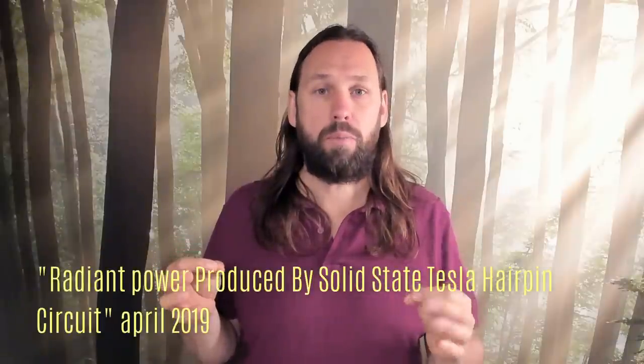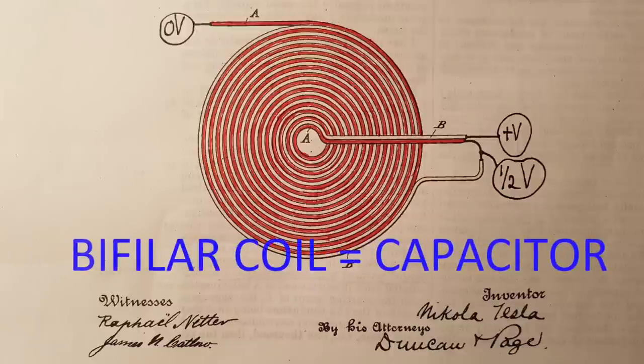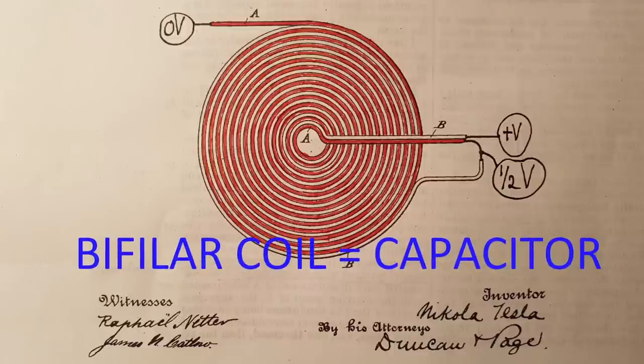So with series resonance, we don't have that. We don't have electricity. We don't have electric power. But when you inject the negative voltage impulse into it, suddenly the series resonant coil that is impulsed can produce power. And I show this in the video released in April 2019 called Radiant Power Produced by Solid State Tesla Hairpin Circuit.